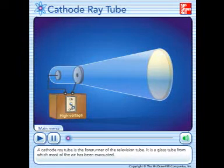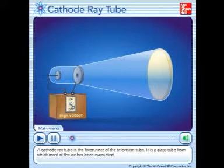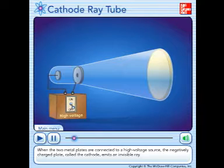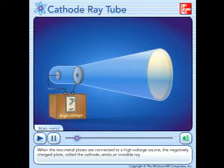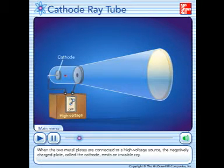A cathode ray tube is the forerunner of the television tube. It is a glass tube from which most of the air has been evacuated. When the two metal plates are connected to a high voltage source, the negatively charged plate, called the cathode, emits an invisible ray.